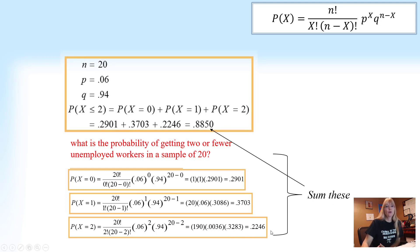And then of course, you sum all of these. And it gives me what is the probability of getting 2 or fewer unemployed workers in a sample of 20.